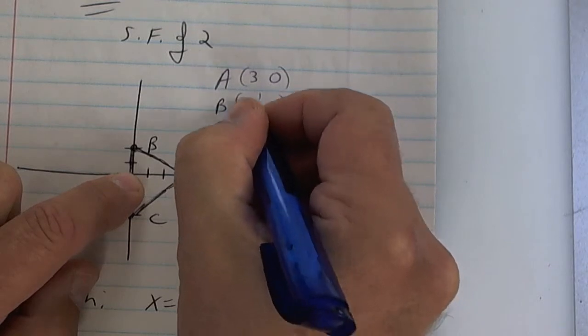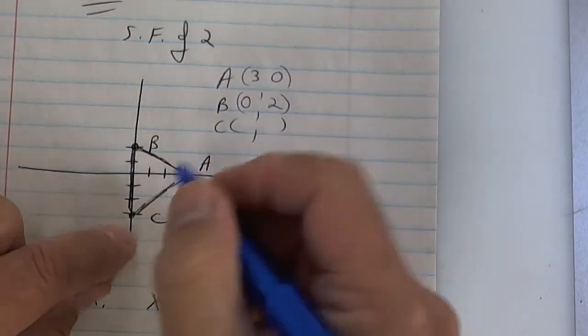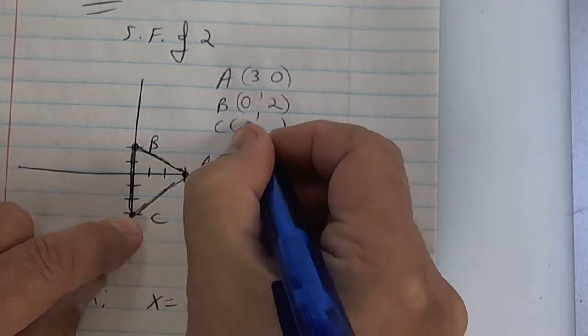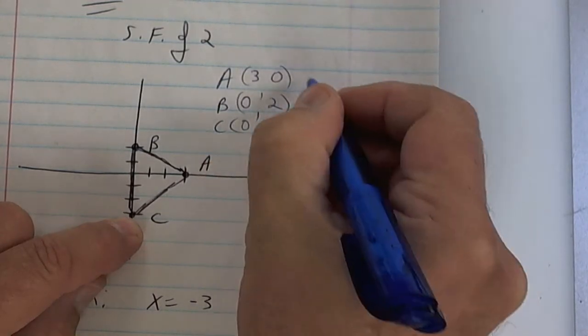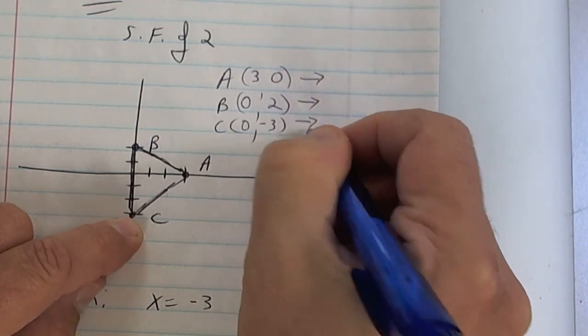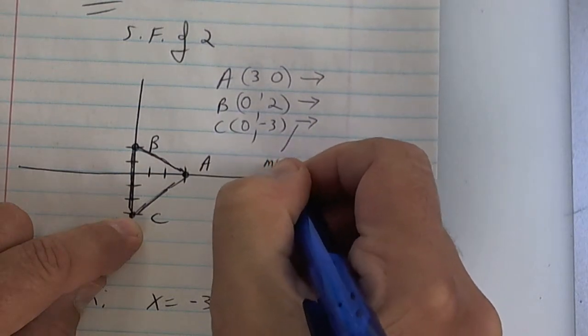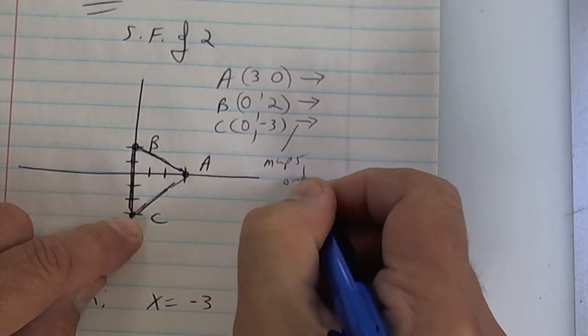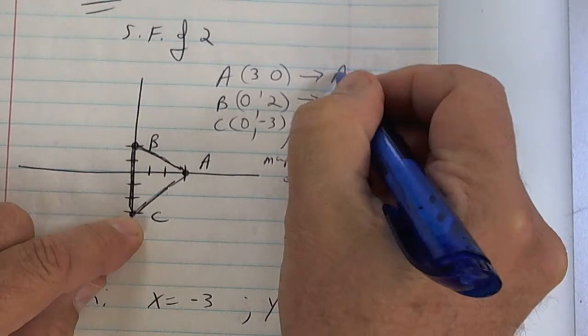Here I go over three up zero. Say that to yourself: over and up. This one you don't go over, you just go up, so it's over zero up two. This one is over zero down three. This arrow means maps onto. Write that down: maps onto. That's a test question.